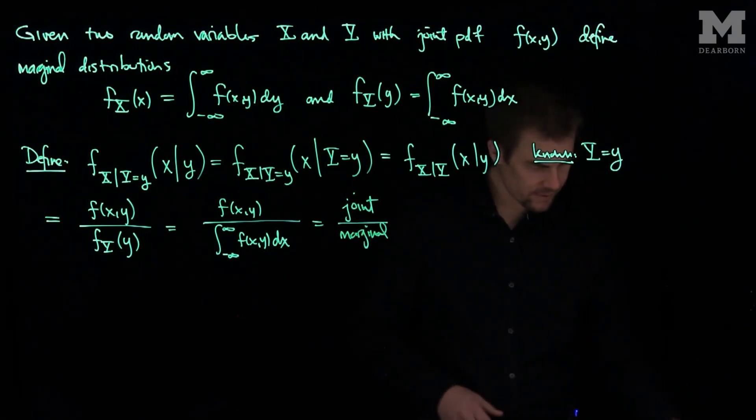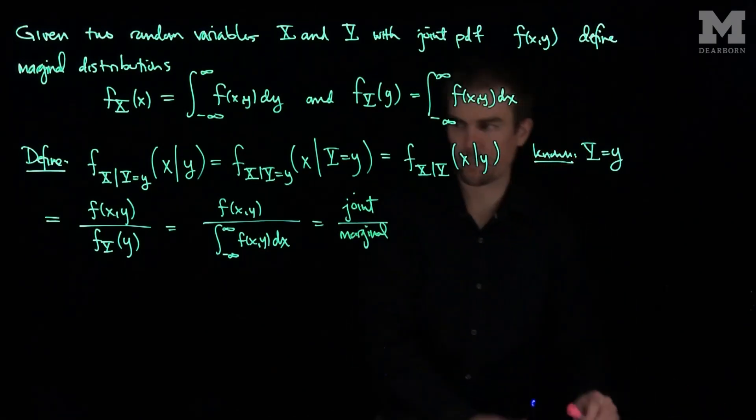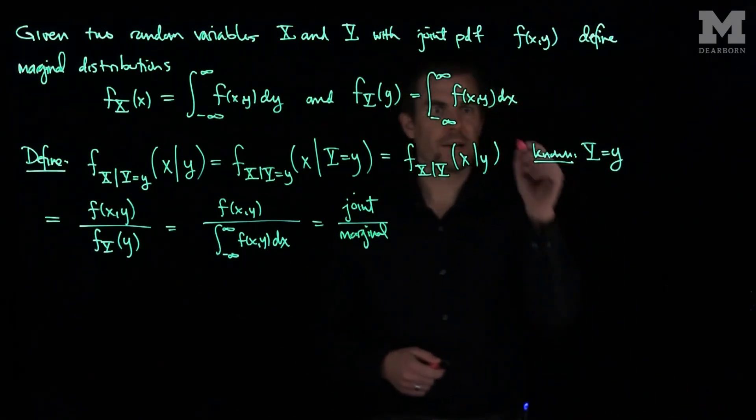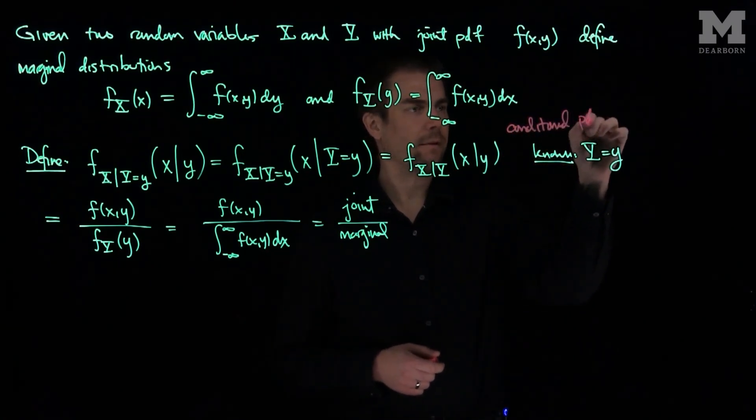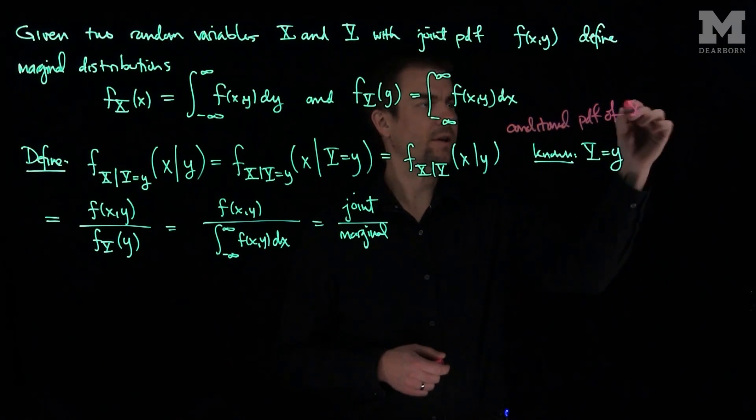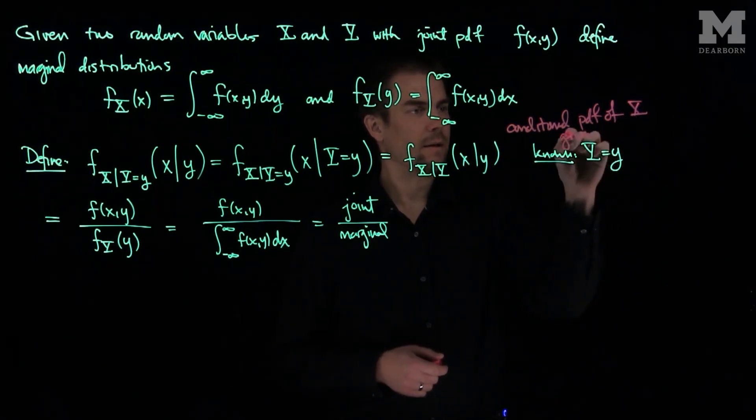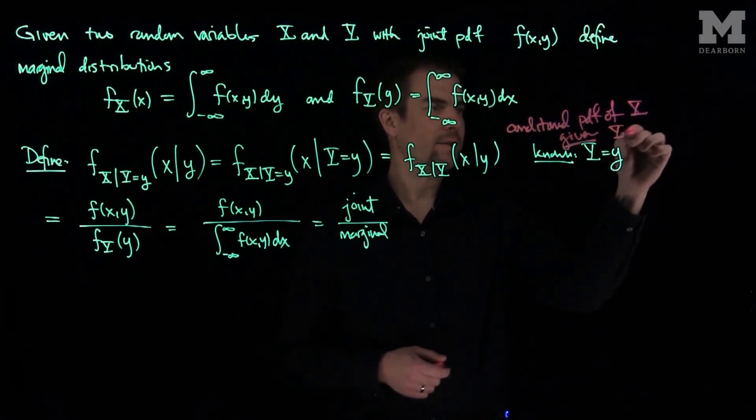So what this is, is the joint distribution over the marginal distribution. And so we can see an example of this. Joint over marginal is always the conditional. So this is the conditional pdf of x given that Y is equal to y.